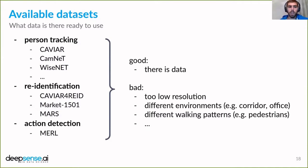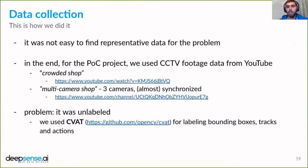We did extensive research on datasets before starting the project, finding quite a lot to choose from for all pipeline components — person tracking, re-identification, and action detection. But we concluded that none of the available datasets perfectly matched our needs: some were too low resolution like the CAVIAR dataset, others were recorded in different environments like corridors or offices, while others covered pedestrian tracking with different movement patterns than shopping scenarios. So for the POC we decided to use footage from CCTV cameras found on YouTube.